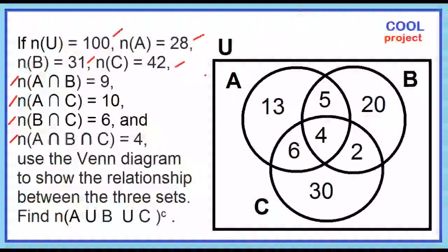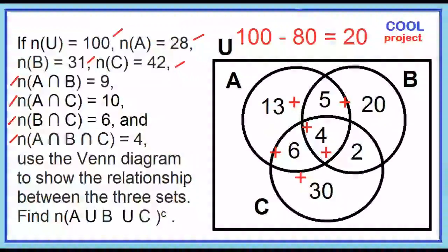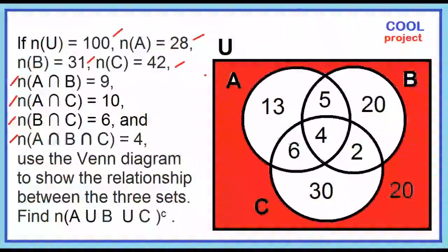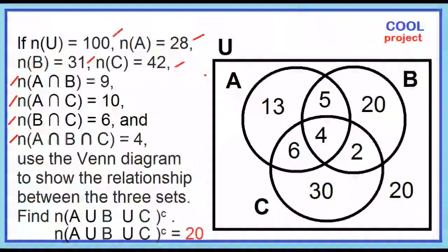The cardinality of the universal set is 100. Let's check if the sum of A union B union C equals 100: 13 plus 5 plus 5 plus 20 plus 4 plus 6 plus 6 plus 2 plus 30 equals 80. How many elements in the universal set are not found in A union B union C? 100 minus 80 is 20. Place 20 outside the circles but inside the rectangle. The cardinality of the complement of the quantity A union B union C is 20.